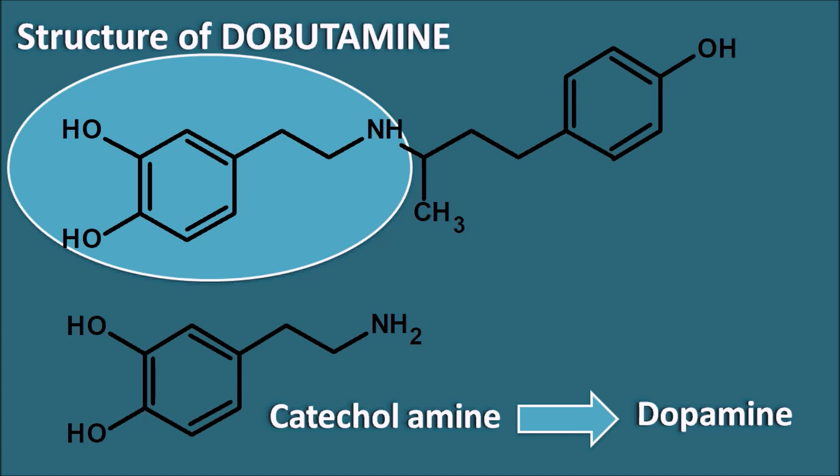Dobutamine is a structural analog of Dopamine. But surprisingly, it does not have action on the dopamine receptors and it has no action on renal vasodilatation. Dobutamine is a modified structure of dopamine which has no affinity towards the dopamine receptors.